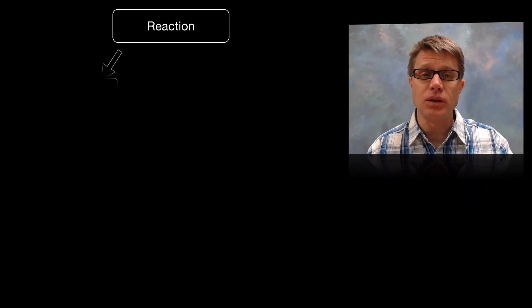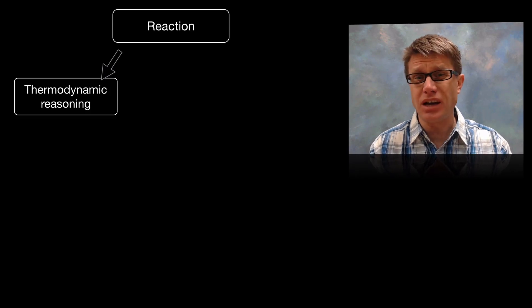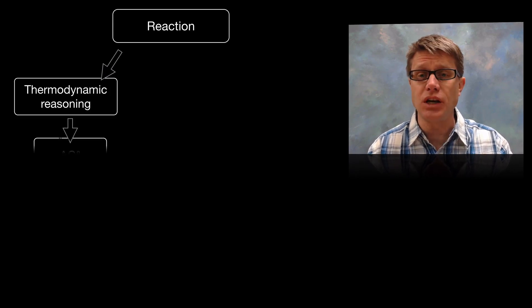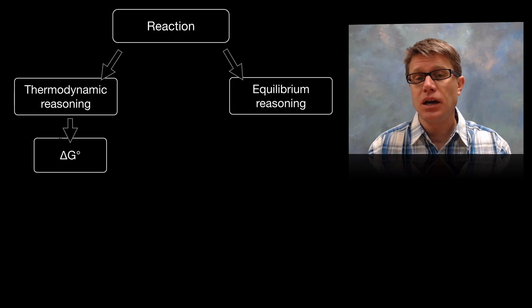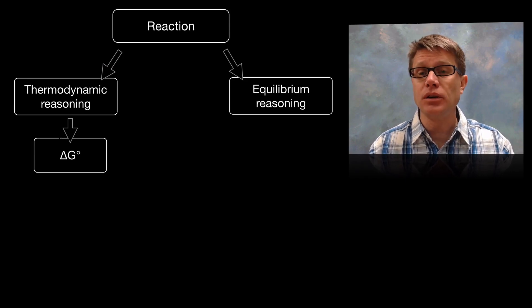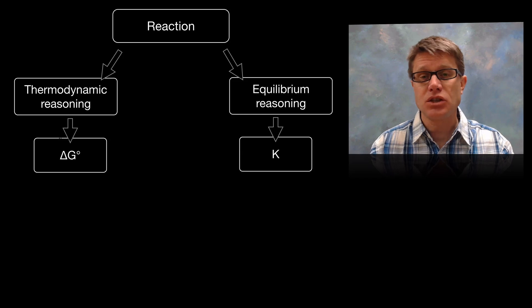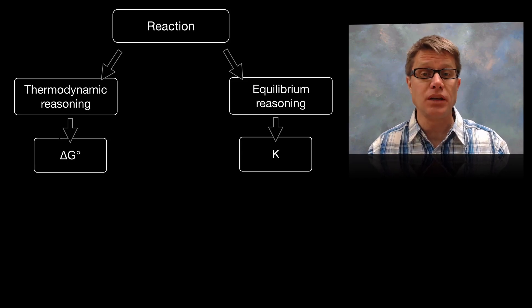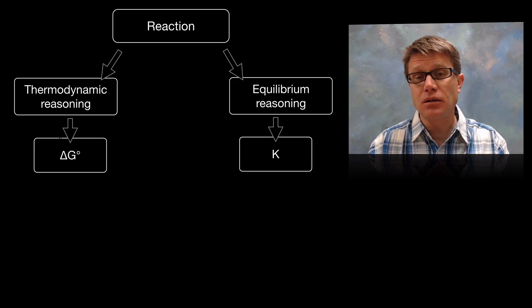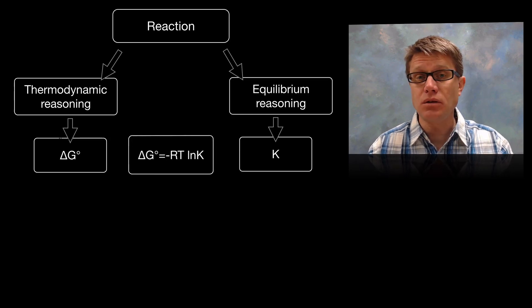And so in any reaction we can look at it using thermodynamic reasoning and the importance of changes in free energy or changes in delta G, and also looking at it as an equilibrium reaction where we've got K, this equilibrium constant which tells us are we shifting more towards the right or towards the left. And there is an algebraic connection between these two.